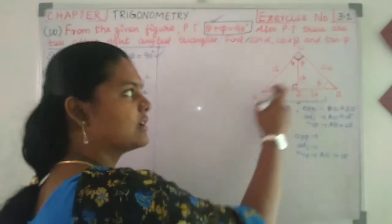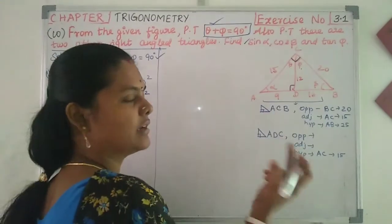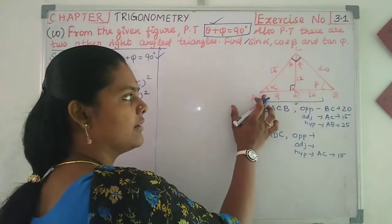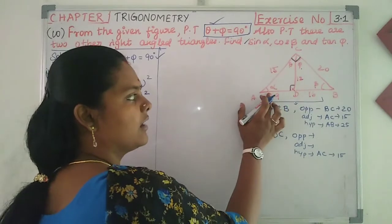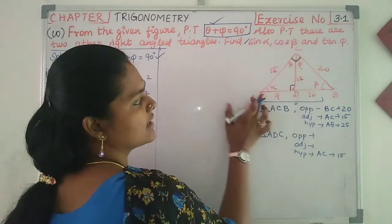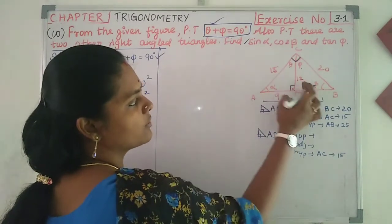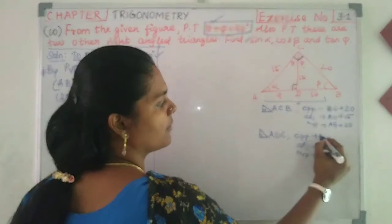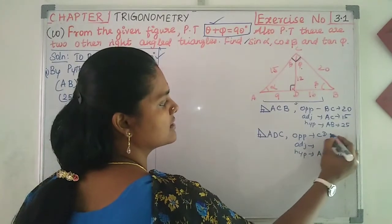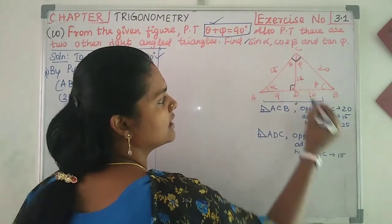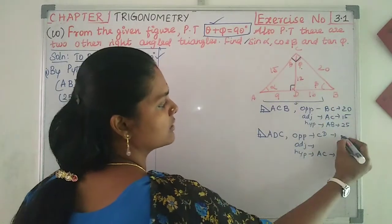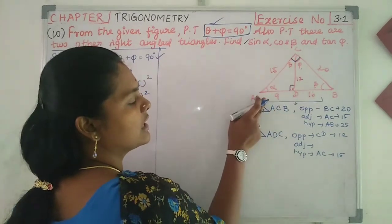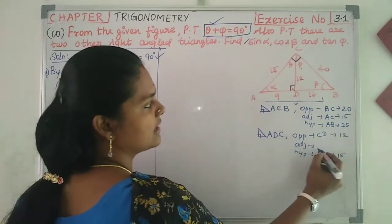Now, if you look at alpha and theta — I have alpha. If I look at alpha, the opposite side is the value of CD.